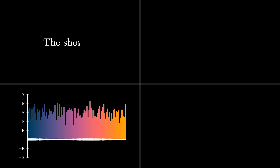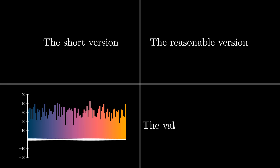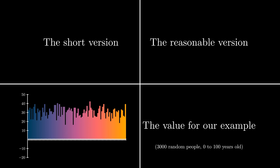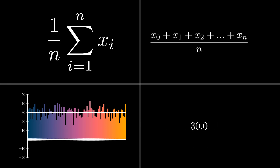Here's a short list of notable mentions. In the bottom left corner we'll have our distribution. In the top left corner we'll have the equation describing our average. In the top right corner we'll have the more readable version of that equation. And in the bottom right corner we'll have the actual value for our example — 3,000 random people aged 0 to 100.